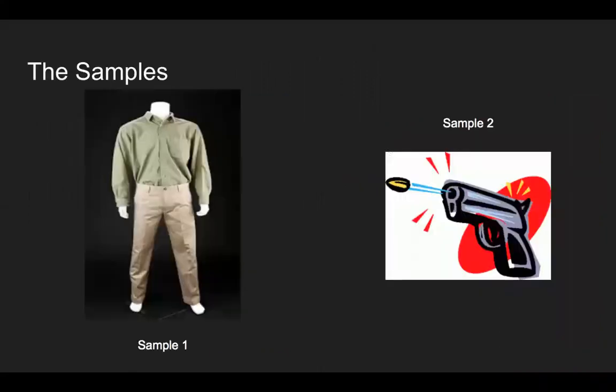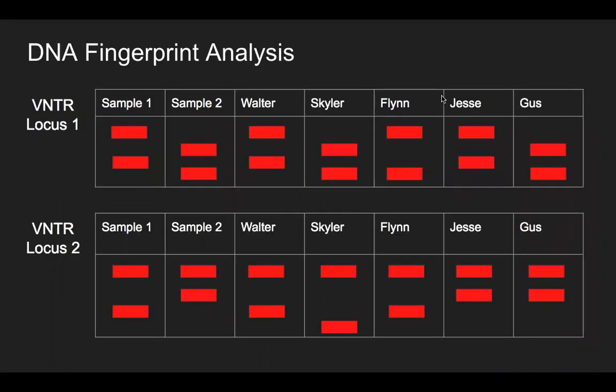Two samples were collected from the scene: one from Walter's clothing and one from the murder weapon. The samples were then amplified at two different VNTR loci and ran through separate gels to create a DNA fingerprint of the suspects and Walt. Looking at the gels produced from the suspect's DNA and the samples found at the scene, we can uncover who committed this murder.